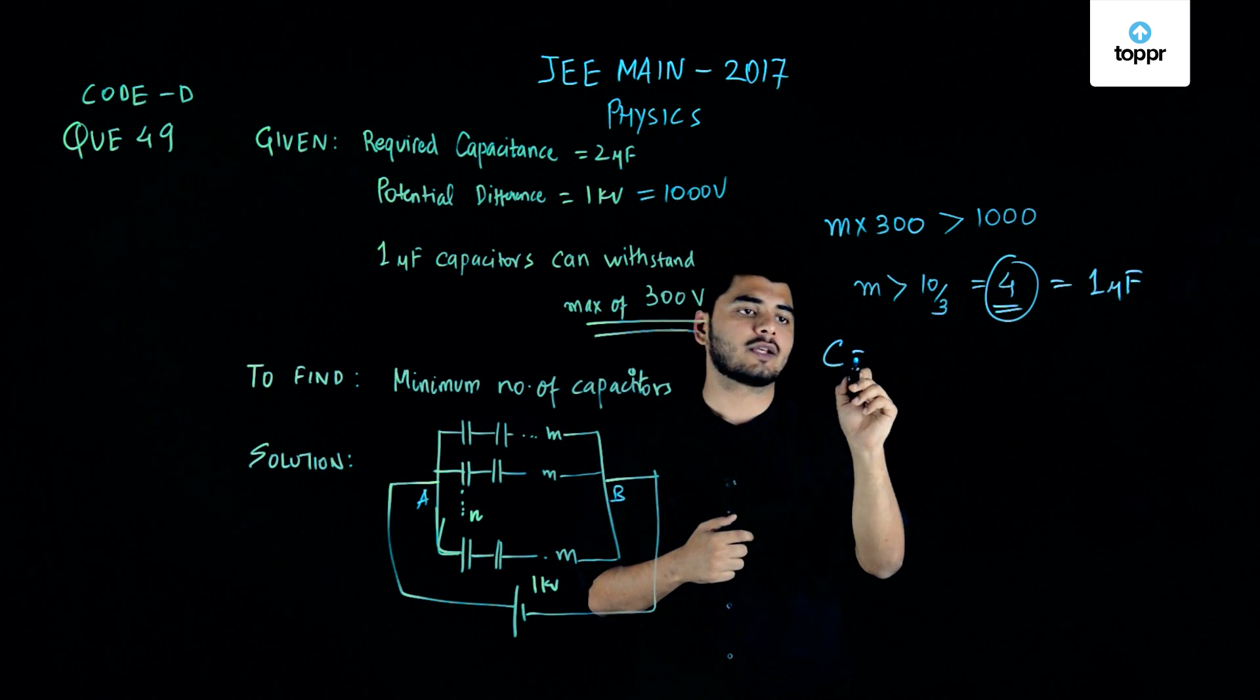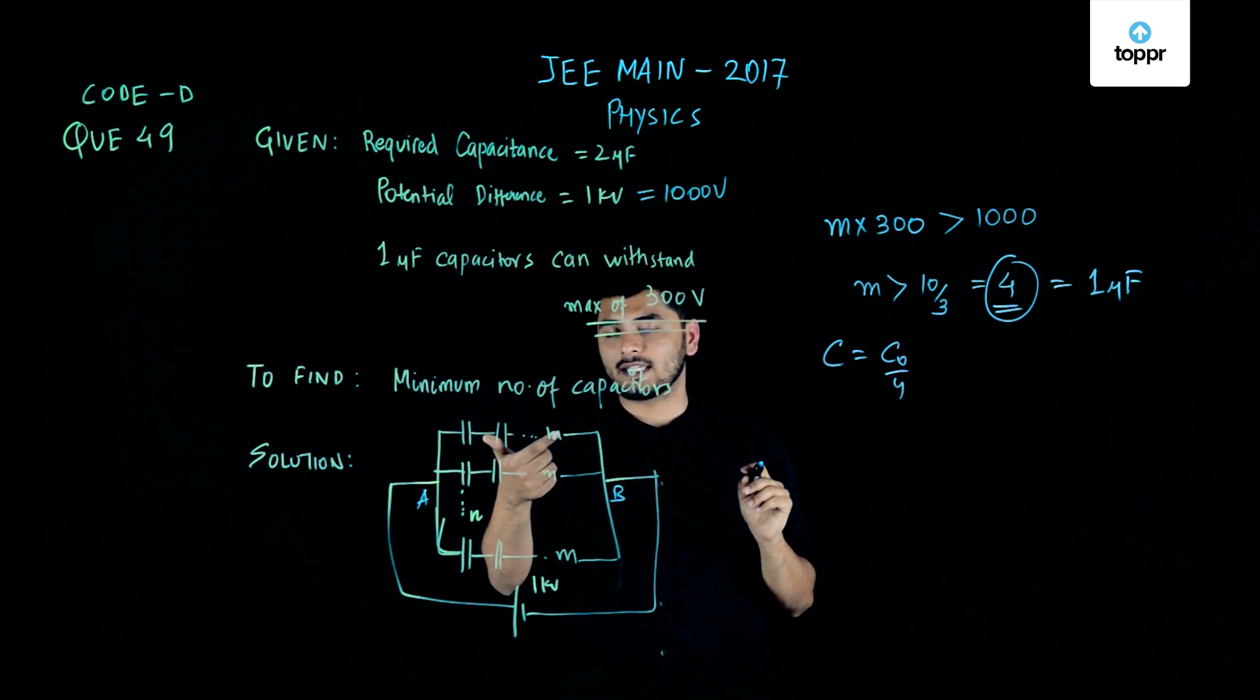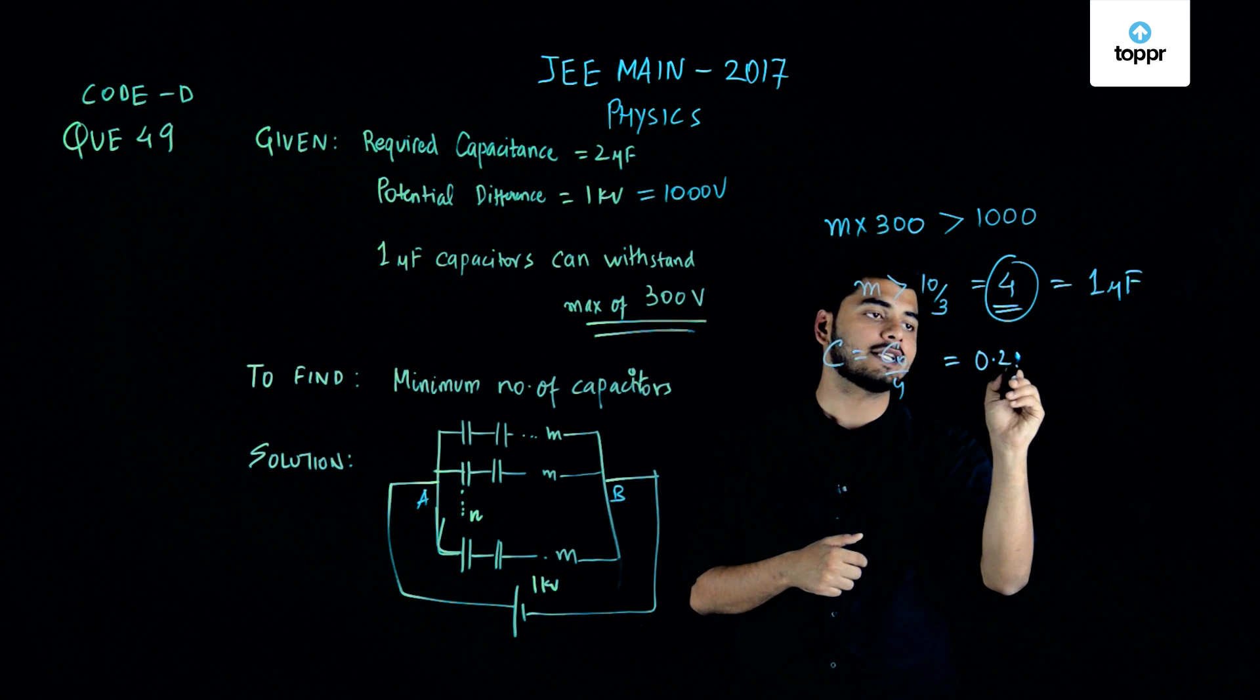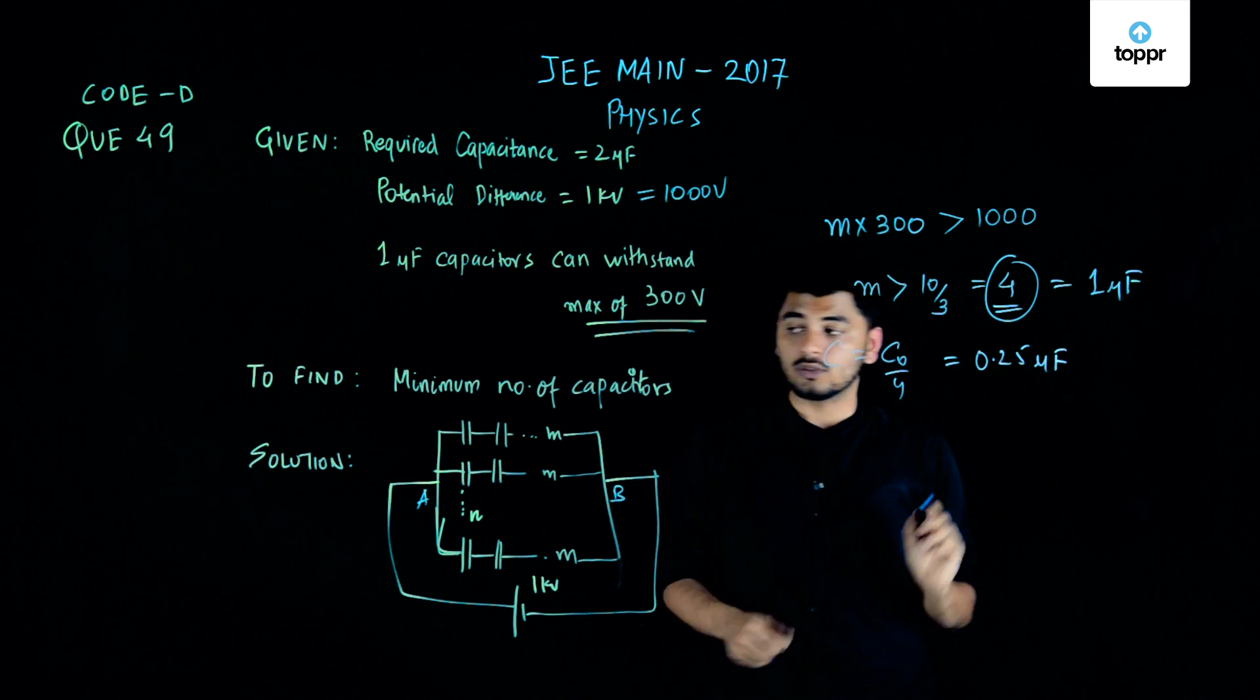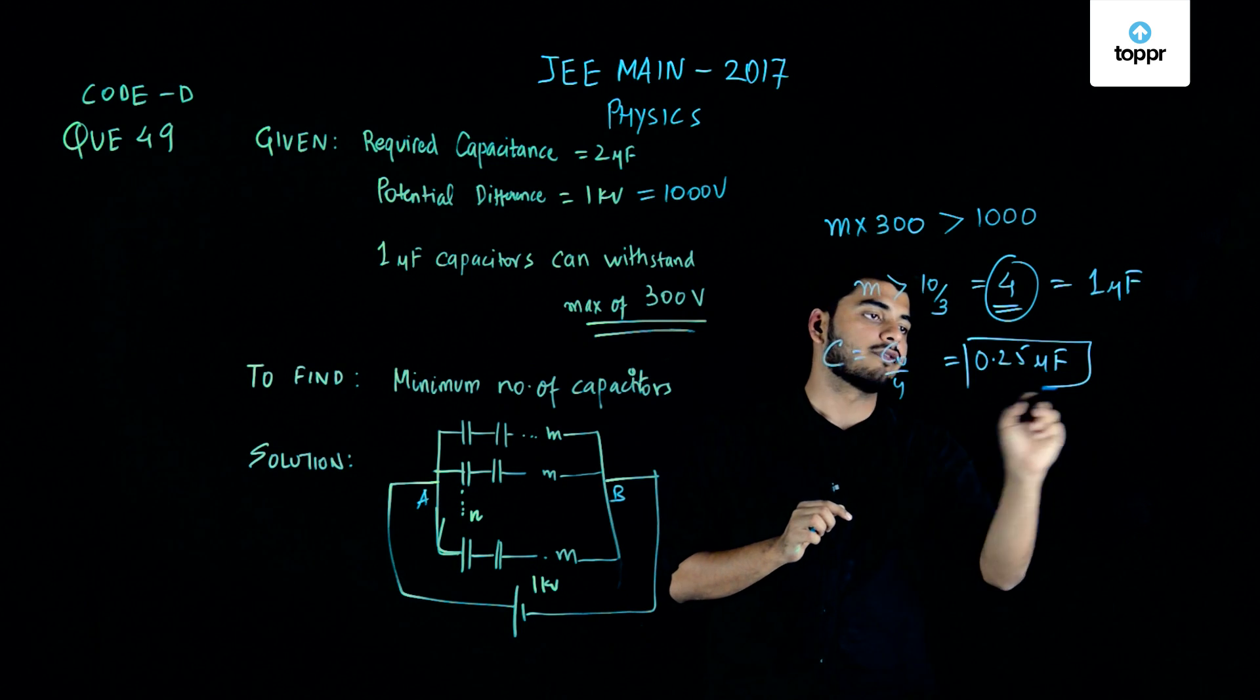So I know that capacitors would be equal to C0 by 4 because 4 of them are connected in series. So that is nothing but equals to 0.25 microfarad. So the capacitance of one single branch is nothing but 0.25 microfarad.